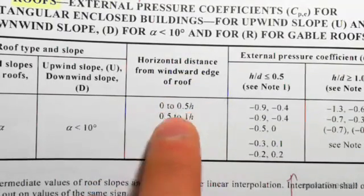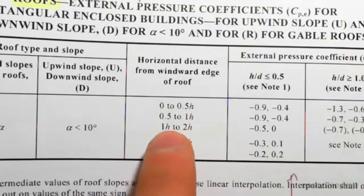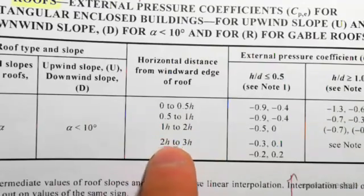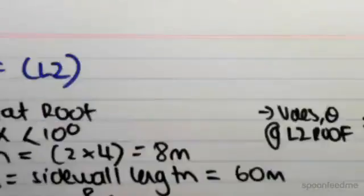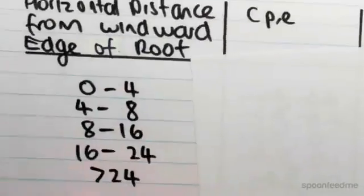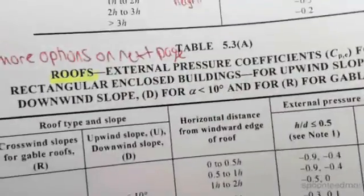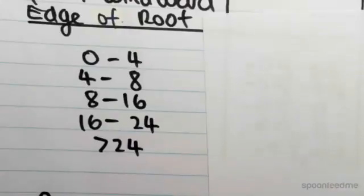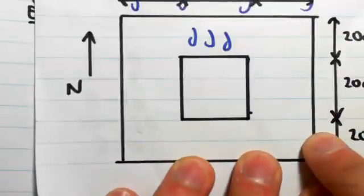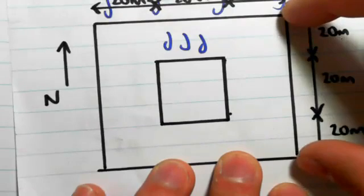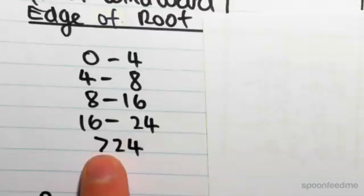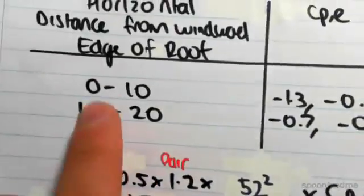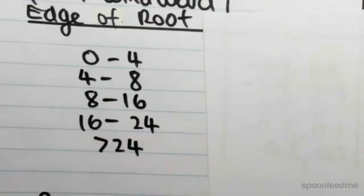All right, so we have h on, we have horizontal distance from windward edge where h is now 8 meters. So our range is going to be 0 to 4, 4 to 8, 8 to 16, 16 to 24. So I've just put in those ranges and also we have greater than 3h, so greater than 24. Now we need all those values because the length of our roof is going to be 60 meters, so we need to include everything. In the previous example we only had to take a couple values from the horizontal distance, but now I need to take all of them.